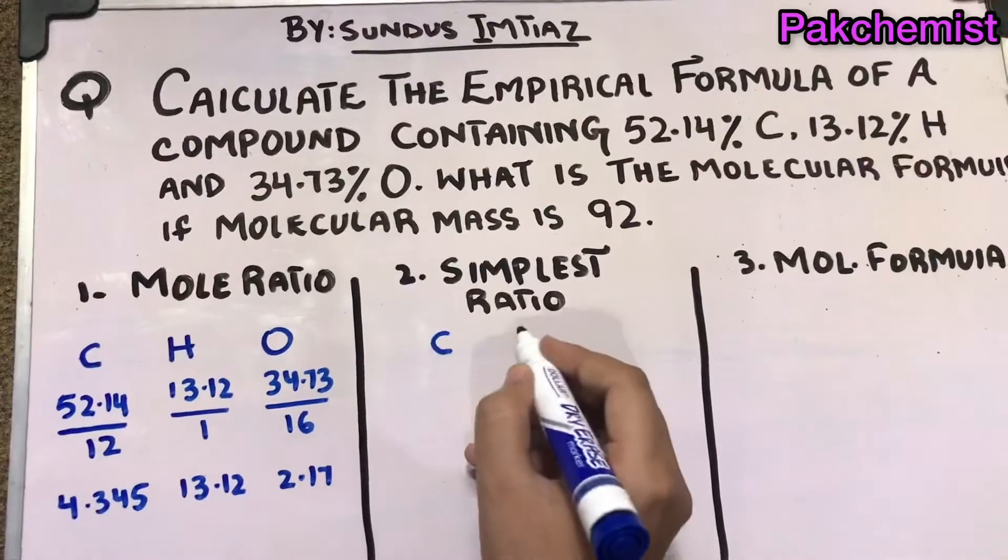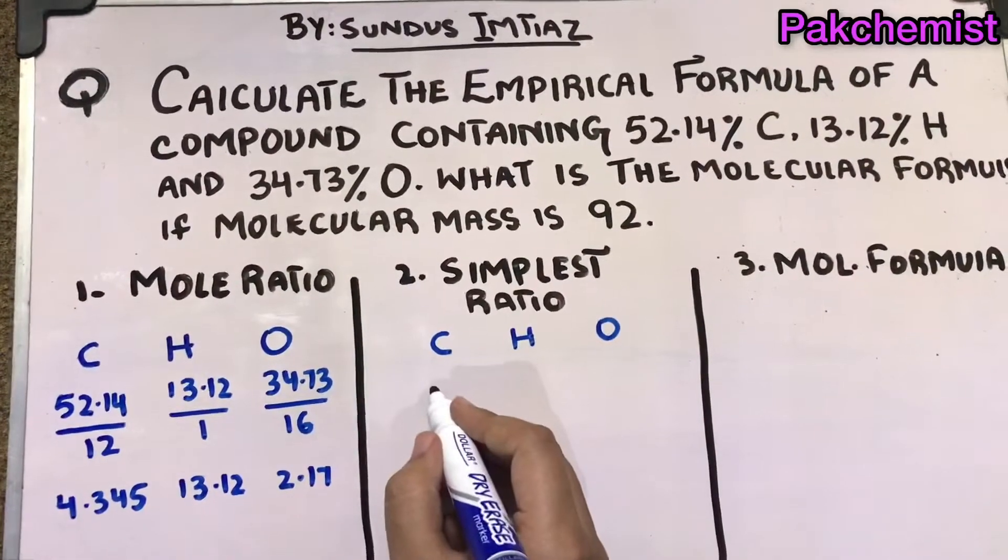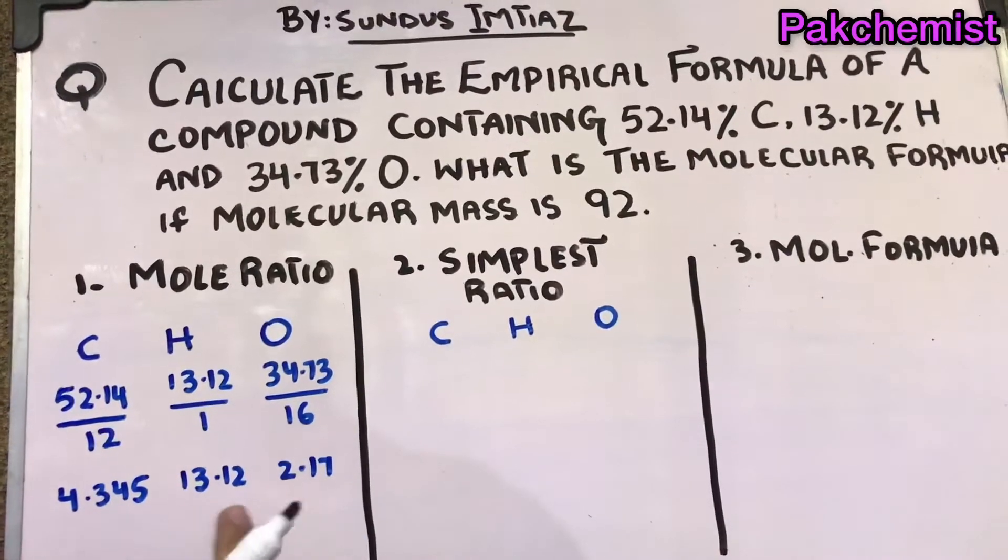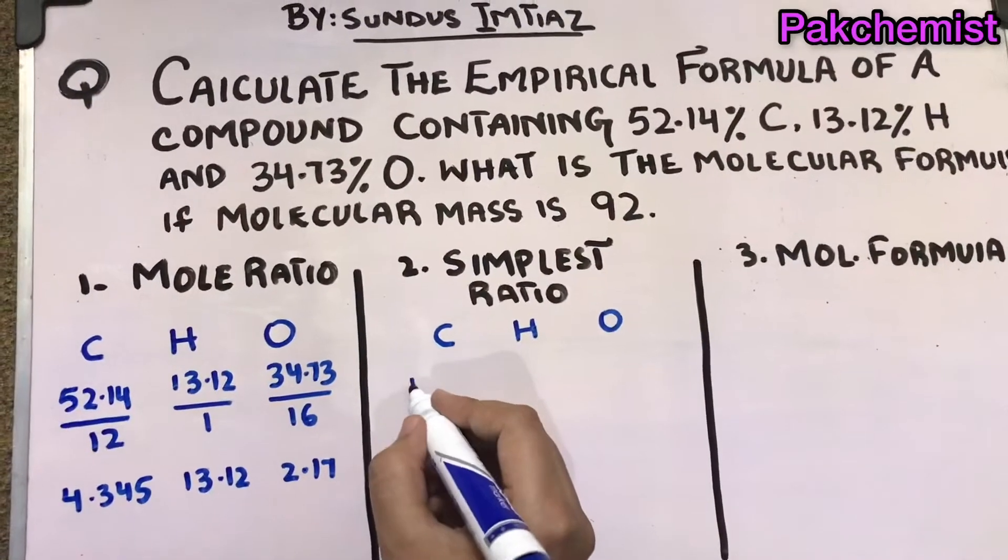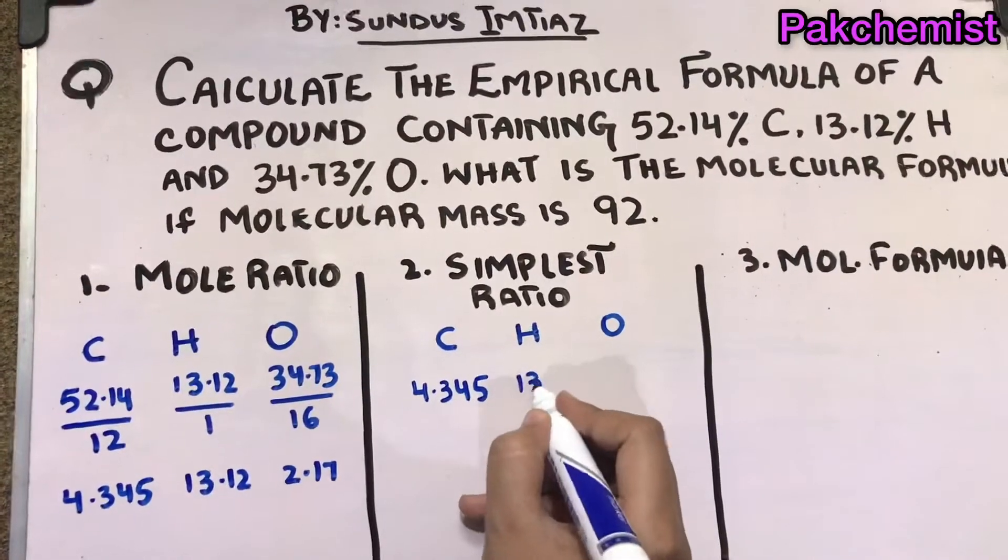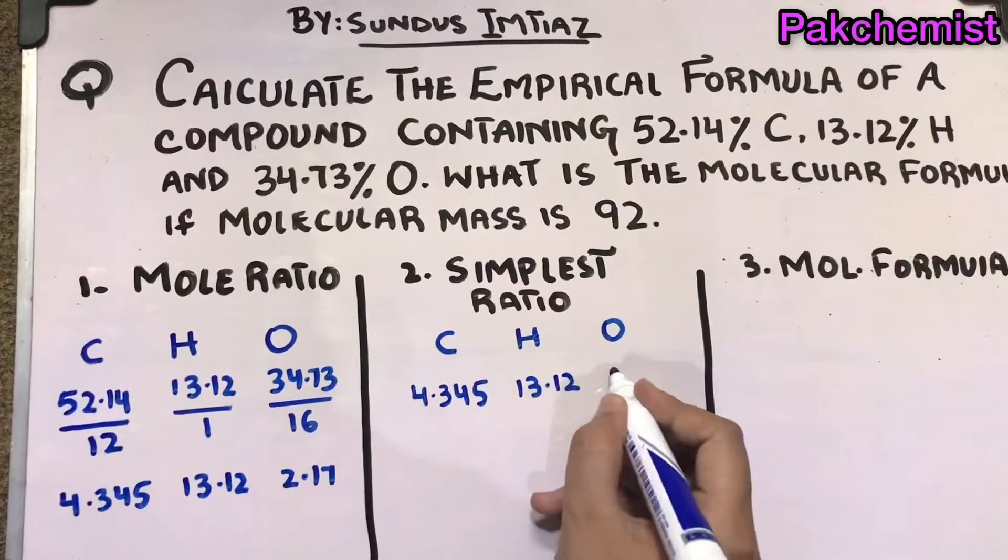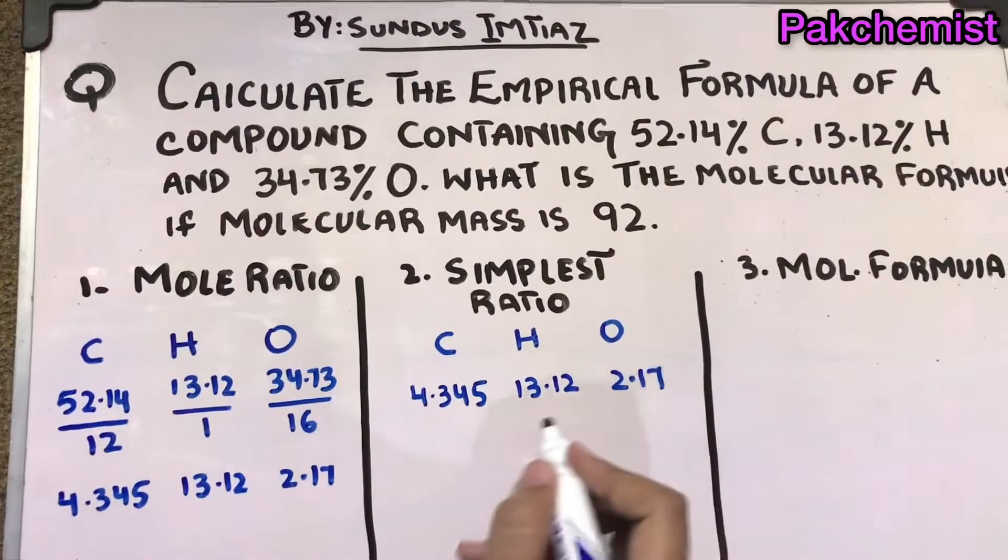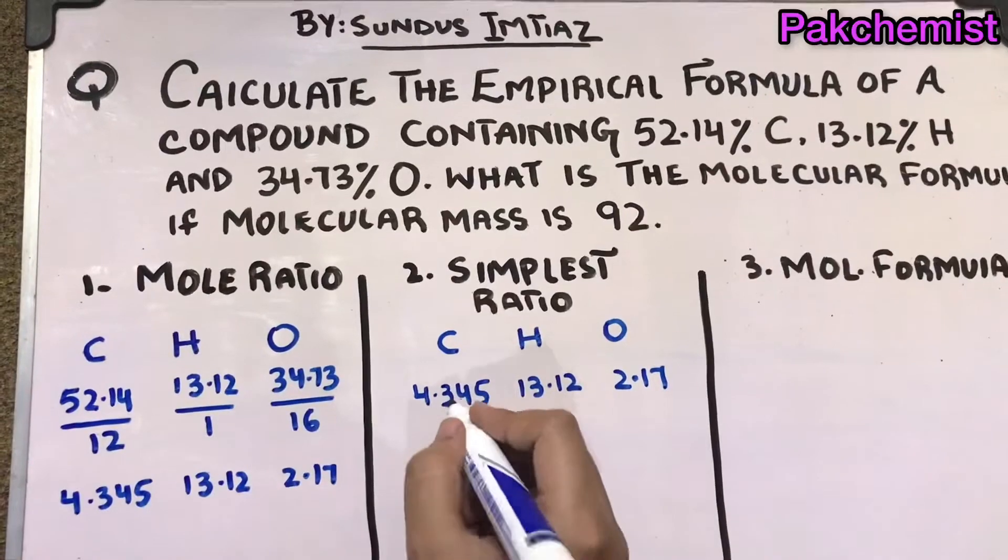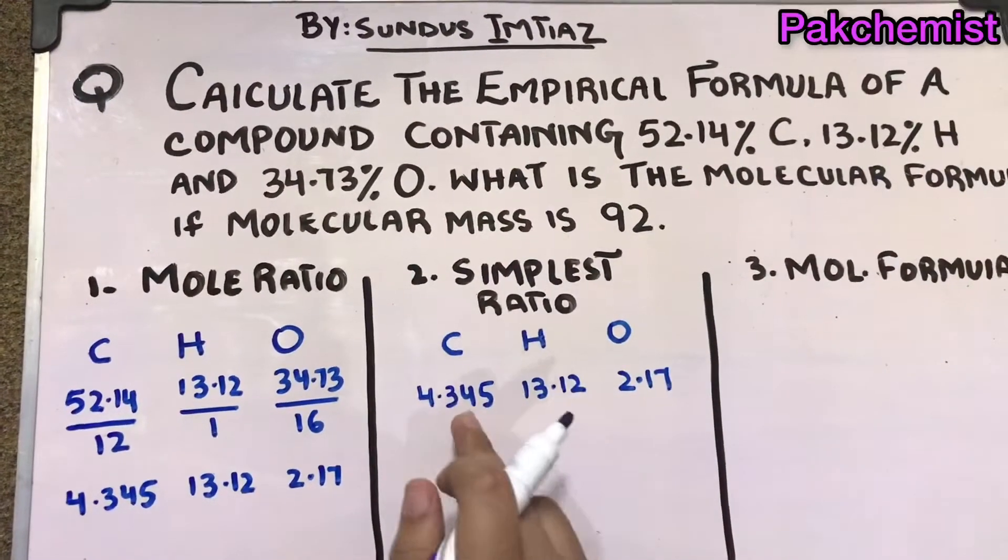Again we will write carbon, hydrogen, oxygen. Here you can see these numbers, so I write the same numbers here. You have to mention that you are calculating simplest ratios. Then what you have to do is divide these numbers with the smallest one. 2.17 is the very smallest digit here, so we will divide.